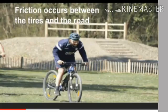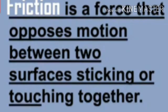There is friction that occurs between the tires and the road. Friction is a force that opposes motion between two surfaces sticking or touching together. We are able to walk on the road because of friction, ride because of friction, and hold things because of friction.